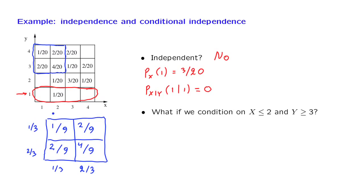And now we notice that this entry of the joint PMF is 1 third times 1 third, the product of the marginals. This entry is the product of 1 third times 2 thirds, the product of the marginals. And so on for the remaining entries. So each entry of the joint PMF is equal to the product of the corresponding entries of the marginal PMFs. And this is the definition of independence.